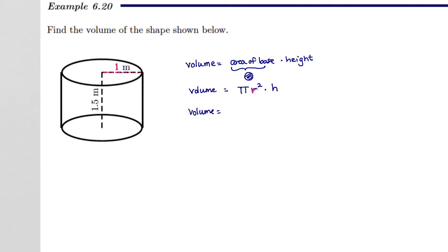So that means my r value is just 1. So I have that the volume is pi times 1 squared times, and then I have the height.